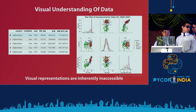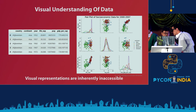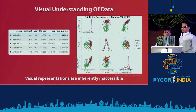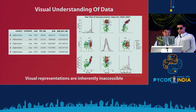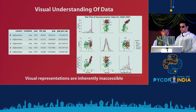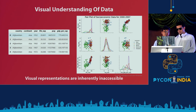Another major challenge: when building a binary classifier, sighted people typically apply PCA or other dimensionality reduction algorithms, plot the data in a 2D grid, and get a feel for whether the data is linearly separable. One solution is to pull out statistical quantities in that space to describe this information to a visually impaired person in an alternative form.